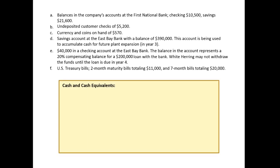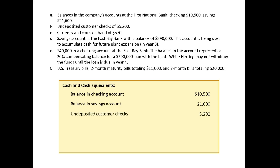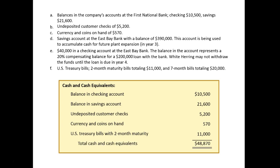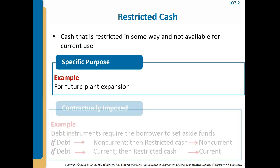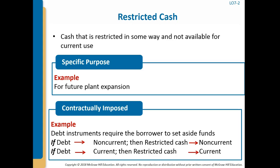Cash and cash equivalents should include the $10,500 checking balance, the $21,600 savings balance, undeposited customer checks, currency and coins on hand, and the 2-month U.S. Treasury bills, for a total of $48,870. Cash that is restricted in some way and not available for current use is usually reported as a non-current asset such as investments in funds or other assets.